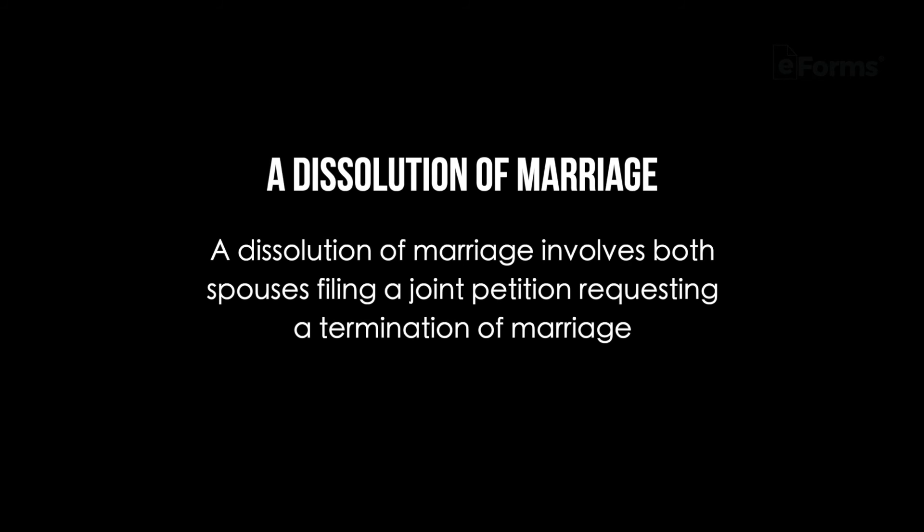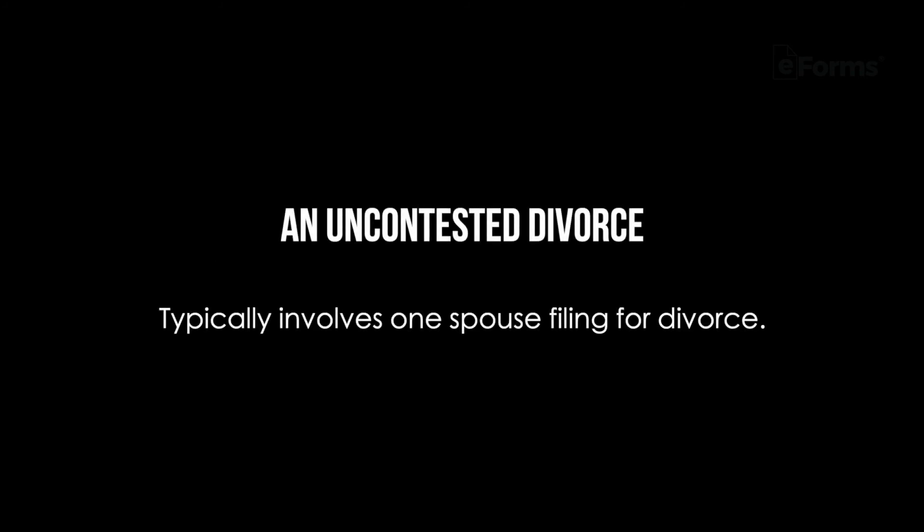A marital settlement agreement can be used in Colorado to avoid distribution by the courts. If both spouses agree on most terms, then they can file an uncontested divorce or dissolution of marriage. A dissolution of marriage involves both spouses filing a joint petition requesting a termination of marriage, whereas an uncontested divorce typically involves one spouse filing for divorce. Both options are ways to move through a divorce without the time and expense of contested divorce proceedings.